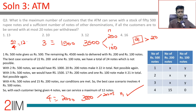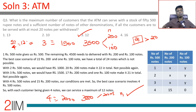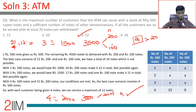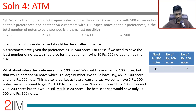With 50 available 500 rupee notes and 4 used per customer, we can serve 50 ÷ 4 = 12.5, so up to 12 customers. Each gets four 500 rupee notes and fifteen 200 rupee notes. We do not have enough 500 rupee notes for a 13th customer. Maximum customers served = 12.